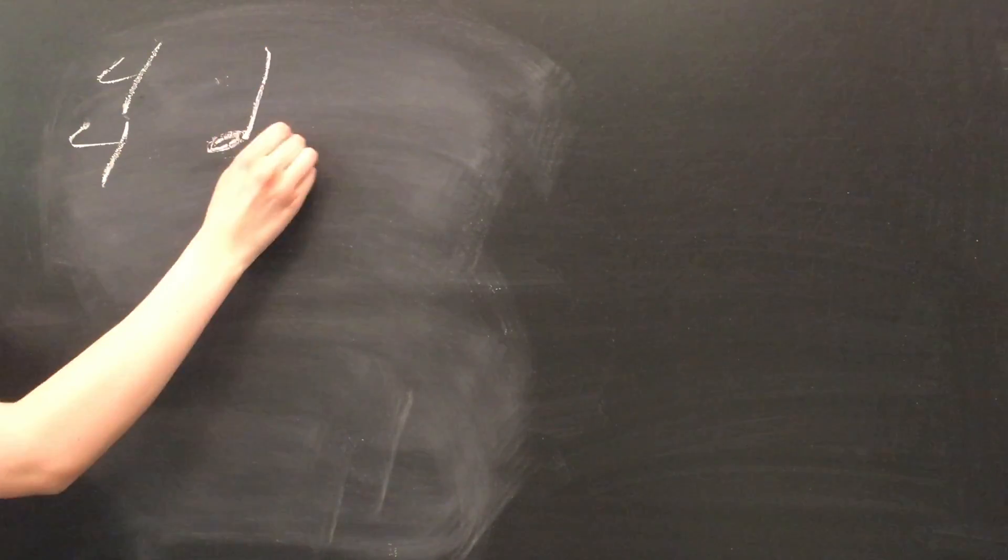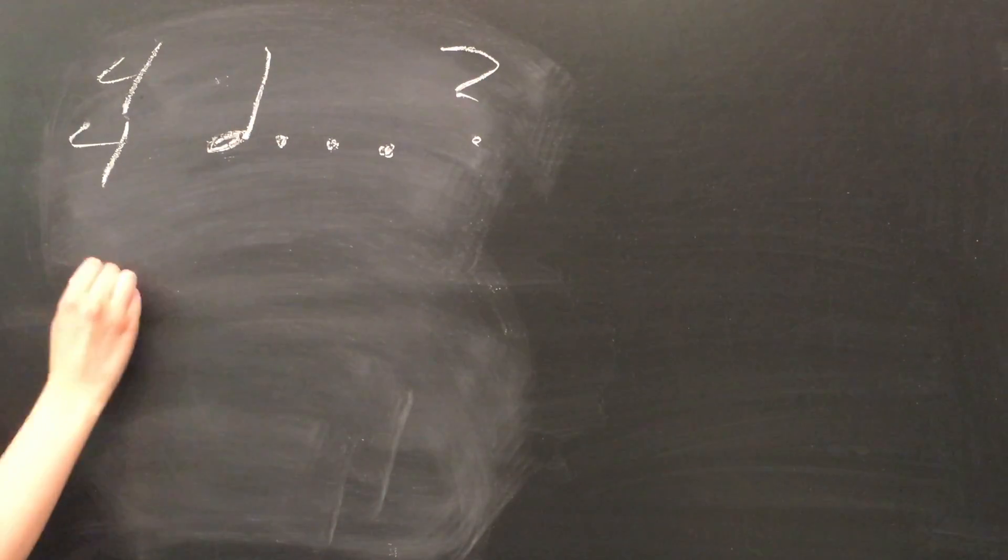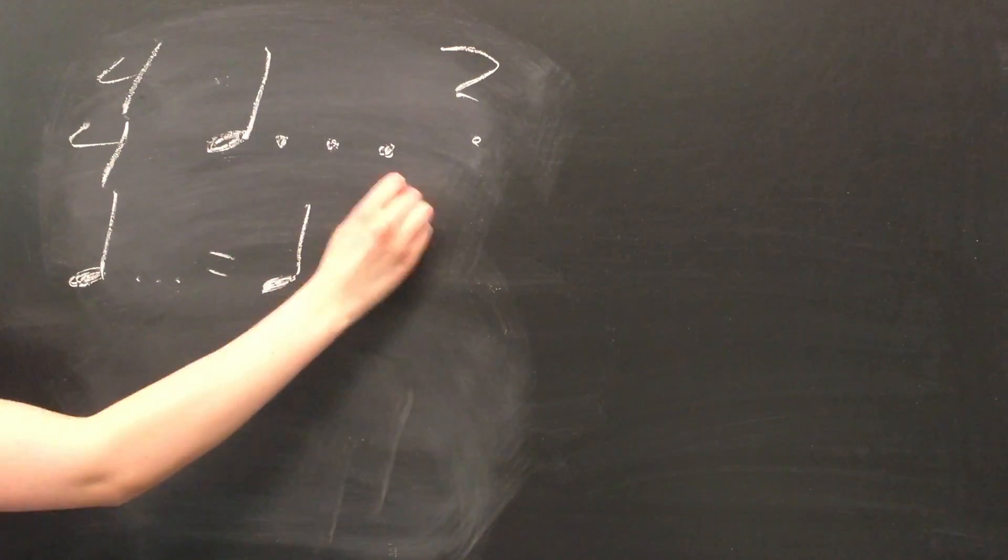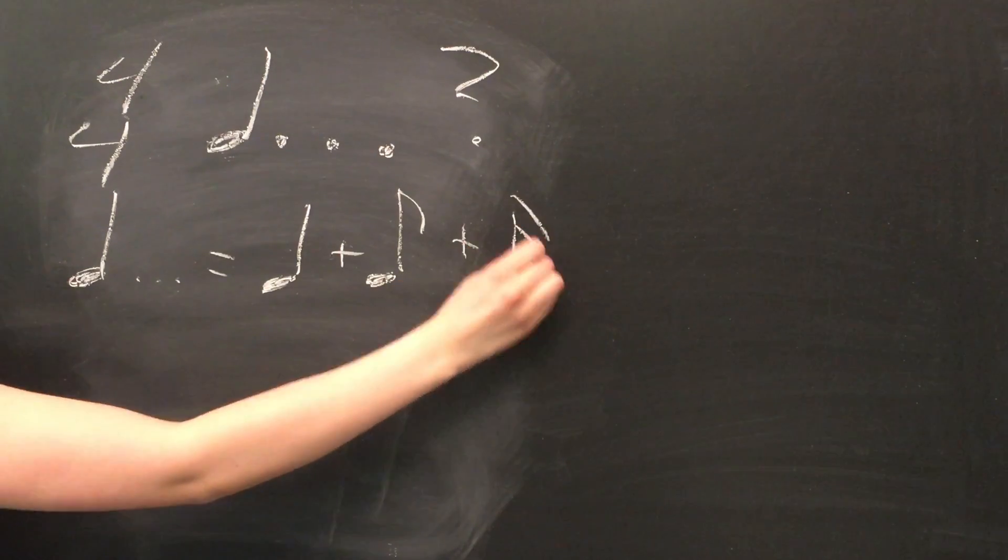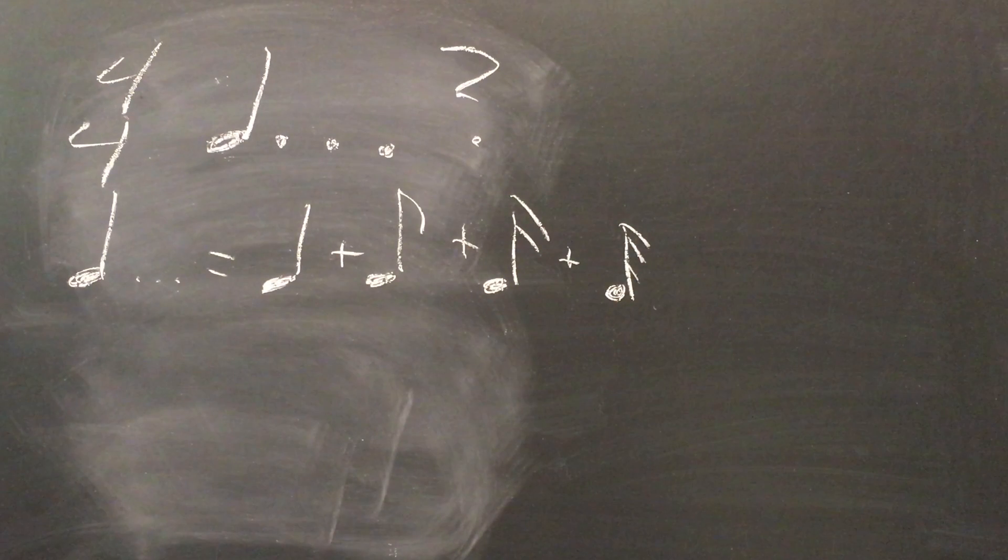We can calculate the value of dotted notes, which are very common in music, using summations. Consider a quarter note with three dots in 4-4 time. The first dot adds half the length of the quarter note, which is an eighth note. The second dot adds half the value of the previous dot, which is another sixteenth note. The final dot adds again half the value of the previous dot, which is a thirty-second note. So in total, we have a quarter note plus an eighth note plus a sixteenth note plus a thirty-second note.